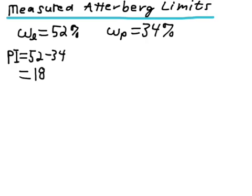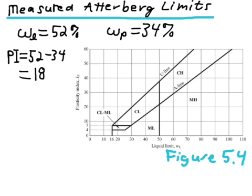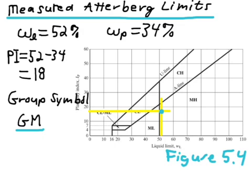So, now we can classify the fines using figure 5.4. We go in at a liquid limit equal to 52, and we go to the plasticity index of 18, and we find that this soil plots below the A-line, so it's a silt. And then the group symbol of this soil must be GM. Notice that it doesn't matter whether it's a low-plasticity or a high-plasticity silt. It's simply going to be a silty gravel.